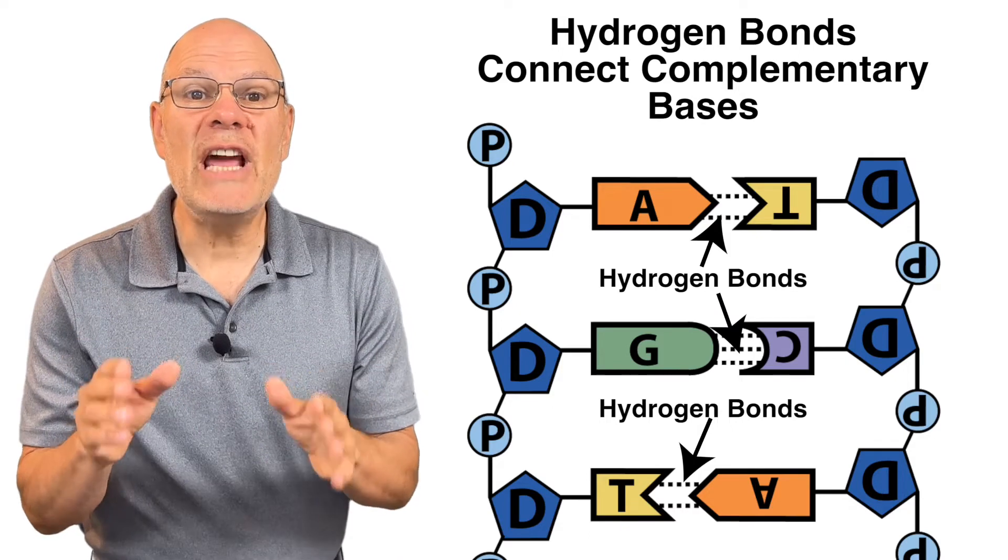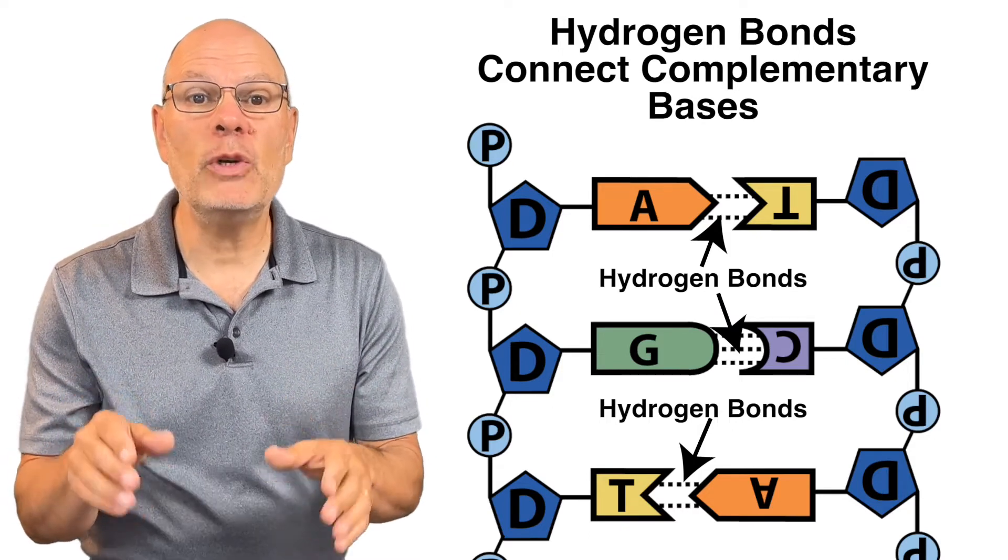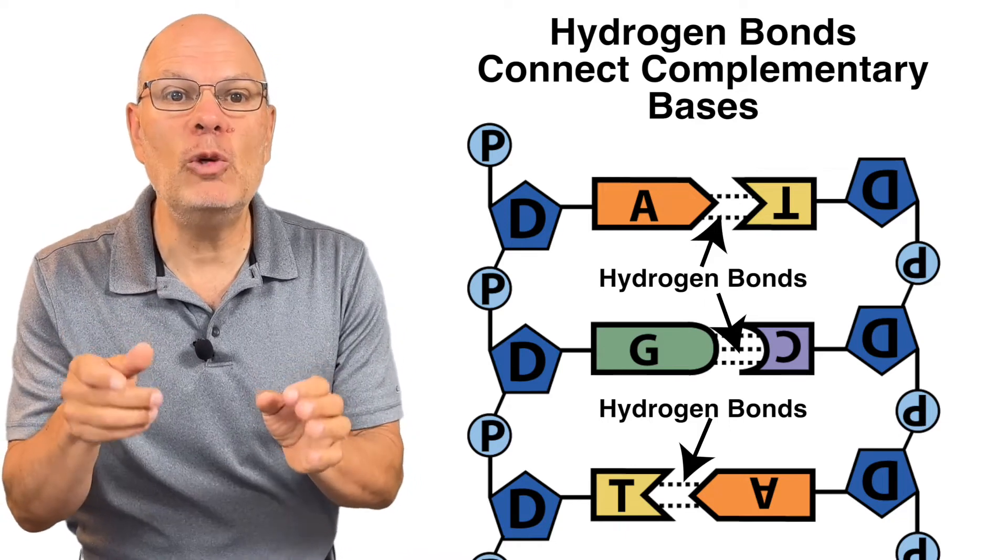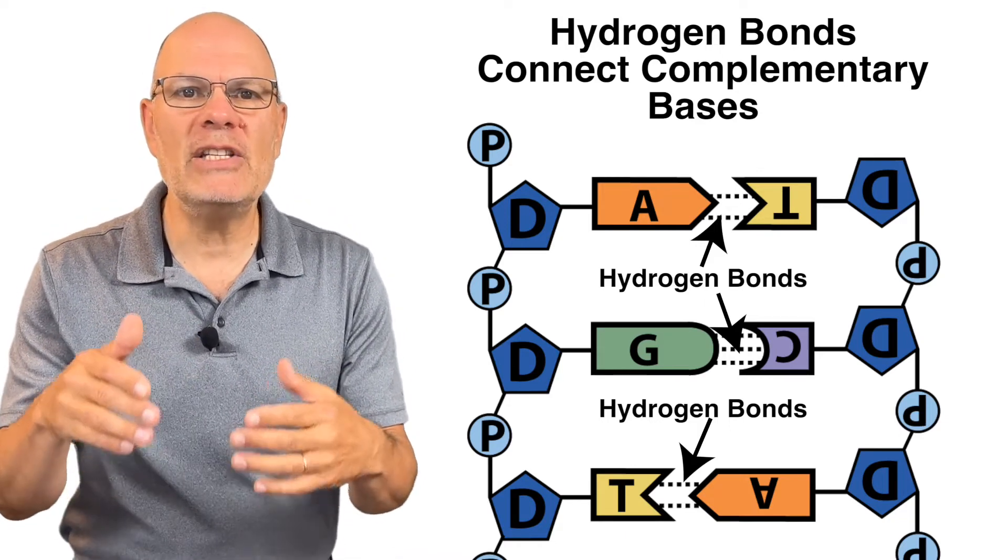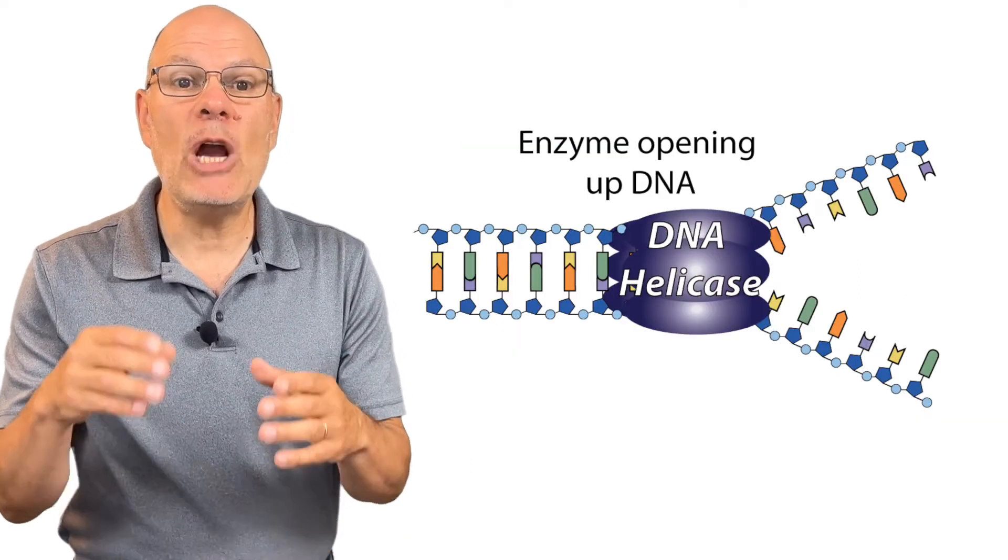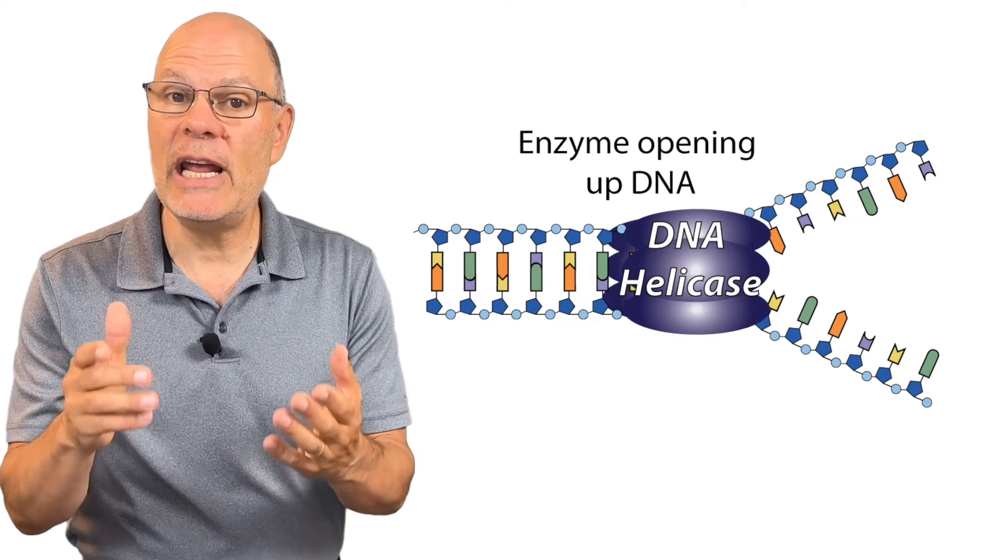Four, the two strands connect through hydrogen bonds that form between complementary nitrogenous bases. Hydrogen bonds, you'll remember, are relatively weak bonds, the same kind of bonds that form between water molecules. The weakness of these bonds enables DNA to be opened by enzymes during DNA replication.